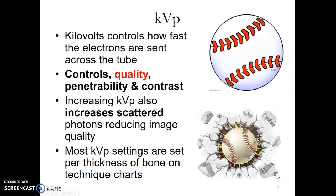KVP. What is KVP? KVP controls how fast the electrons are sent across the tube. It controls quality, penetrability, and subject contrast. Increasing KVP also increases scattered photons, reducing image quality. Most KVP settings are set for thickness of the bone on technique charts.